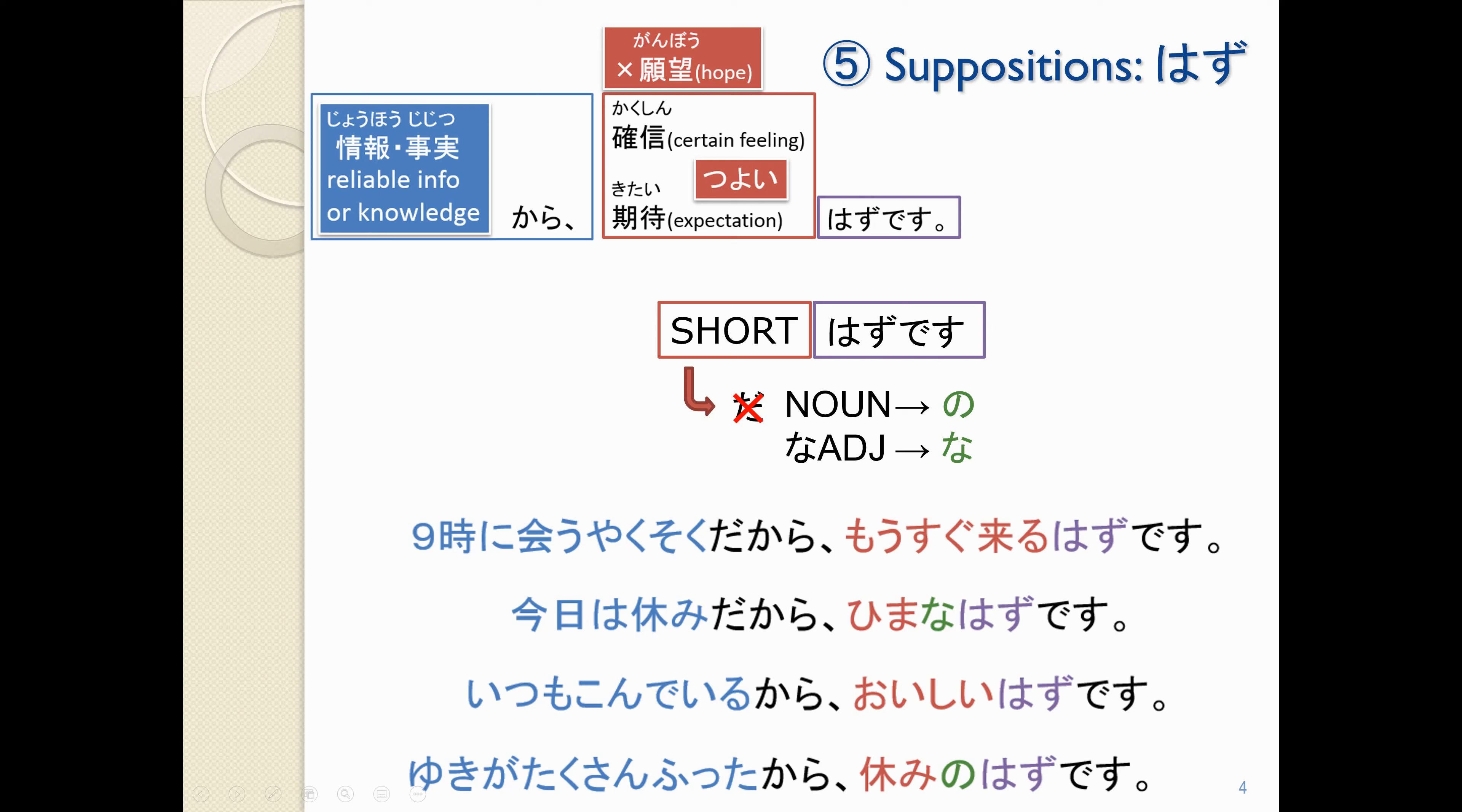やすみのはずです。 Verbs and い adjectives, we can just put them how they are, right next to はずです. But な adjectives, we need な. Nouns, we need の. Because this はず is technically a noun. So, it works the same way as, like, if we had ひと.